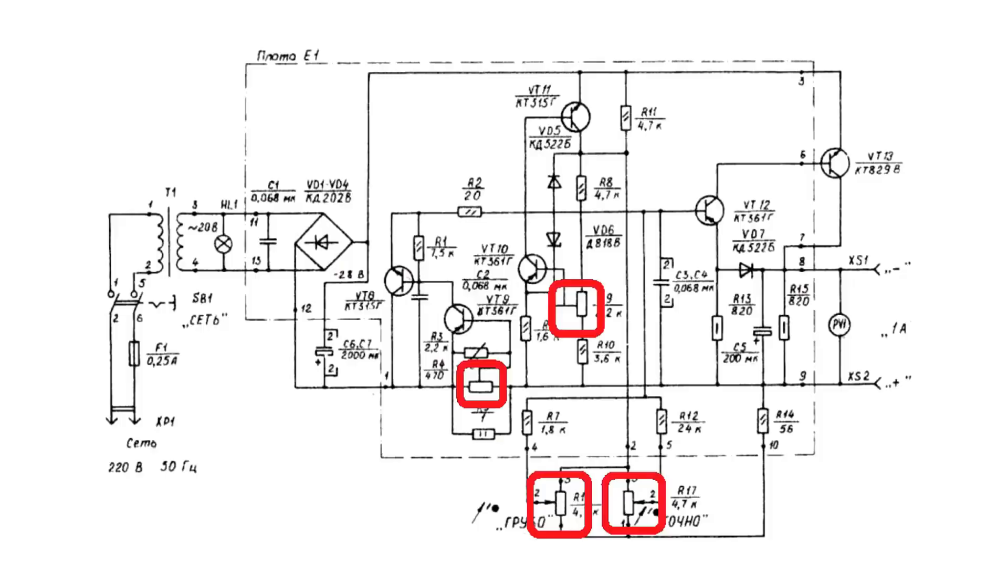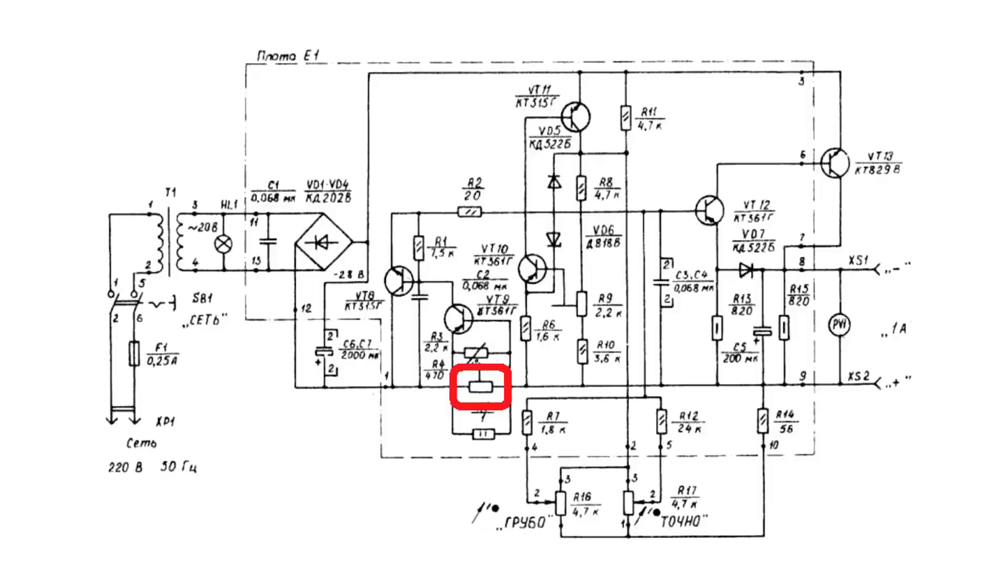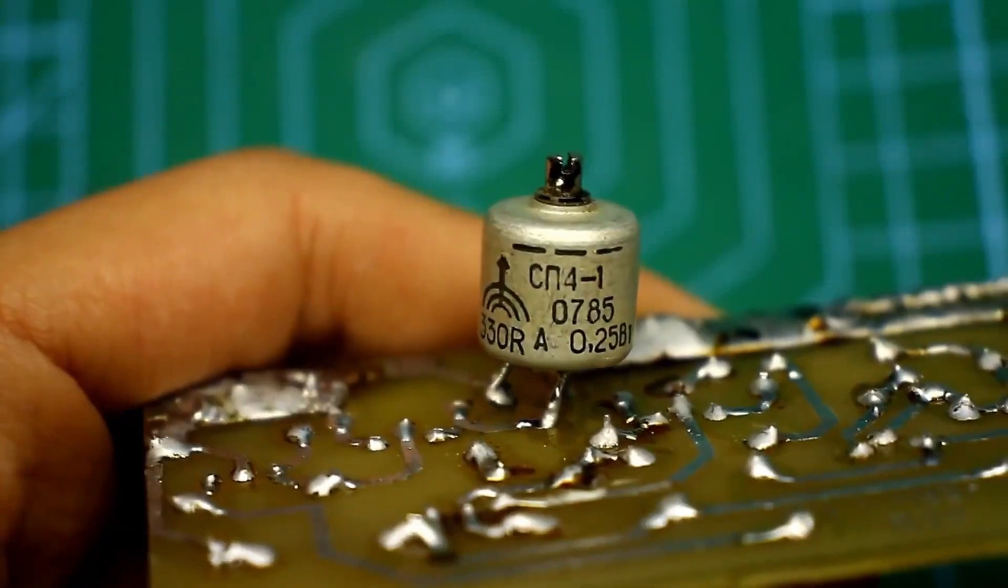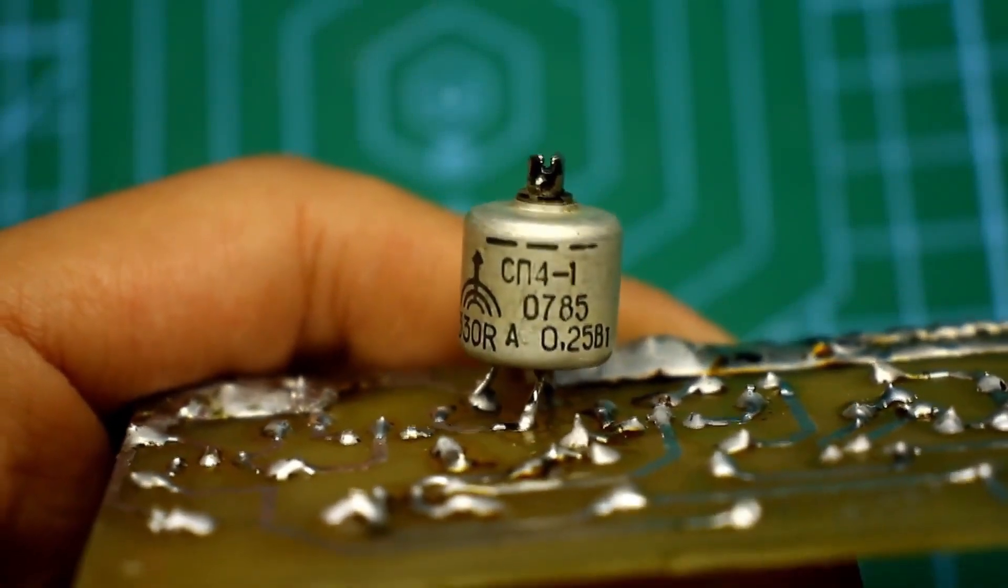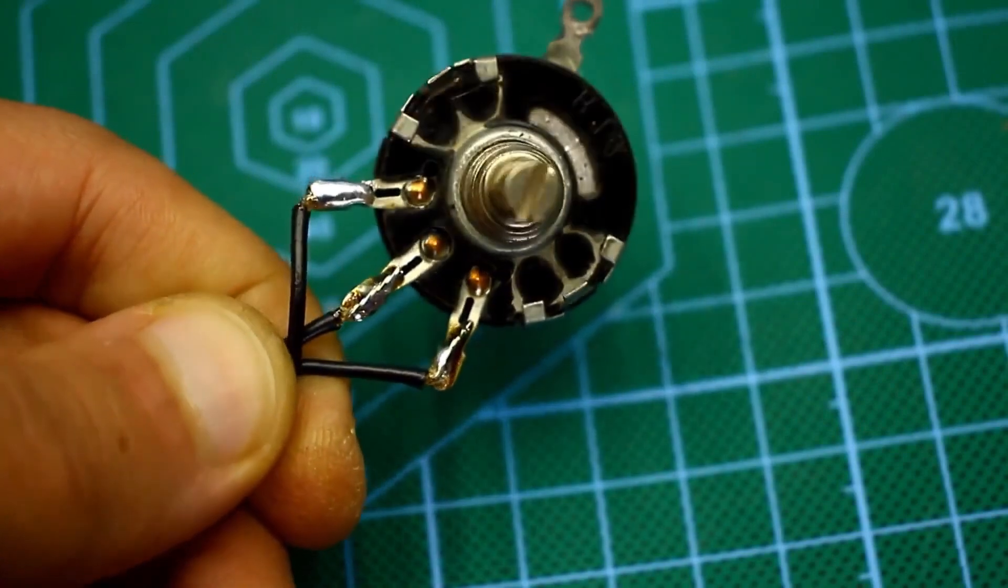There are four variable resistors, two of which are trimmers, and the others are intended for coarse and fine adjustment of the output voltage. The first resistor is responsible for current limitation, a kind of current protection. If desired, this resistor can be brought outside. In that case the unit will have the capability to limit current.